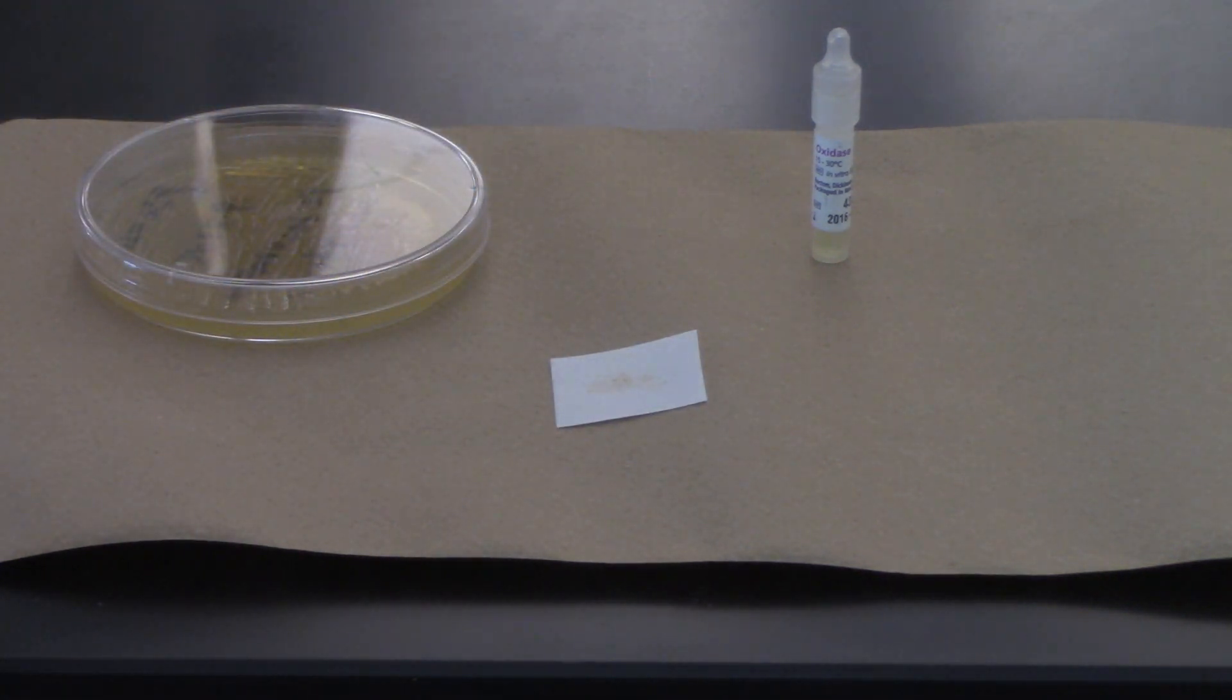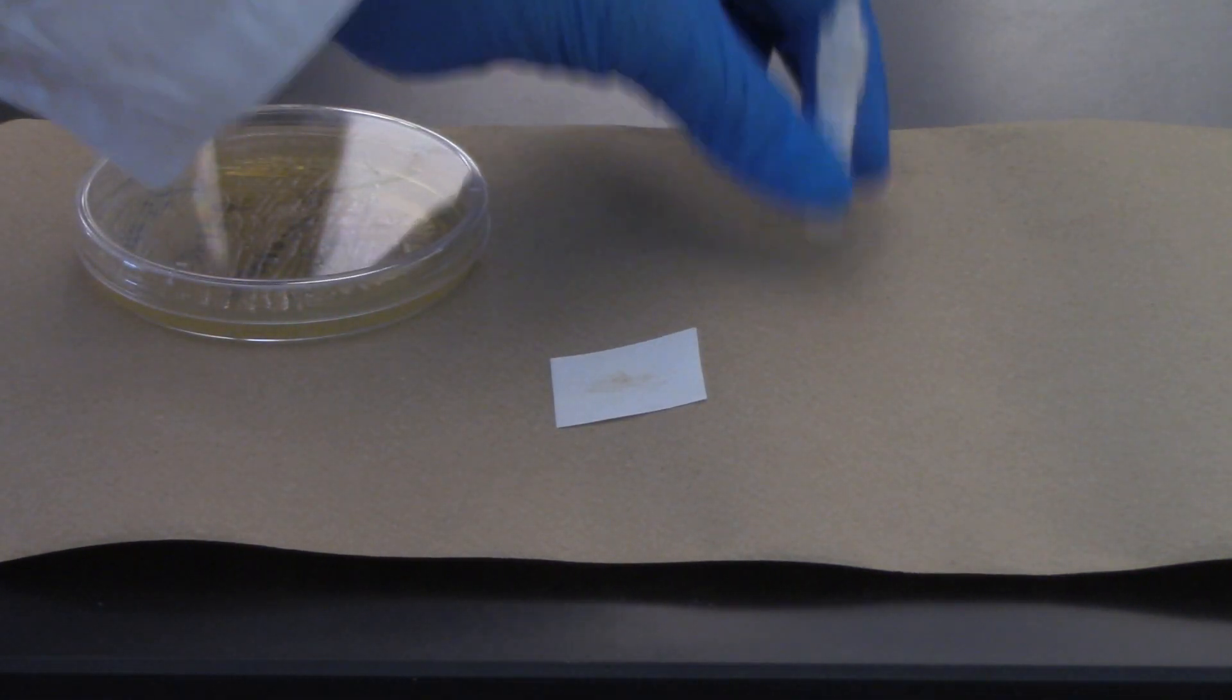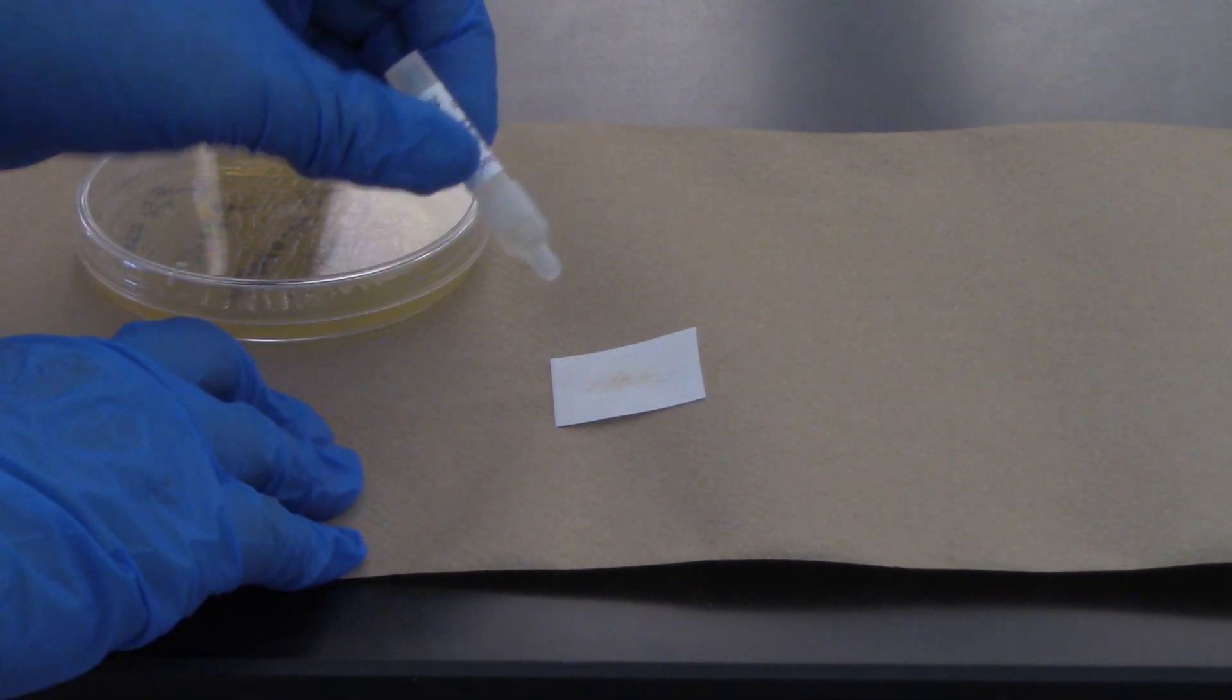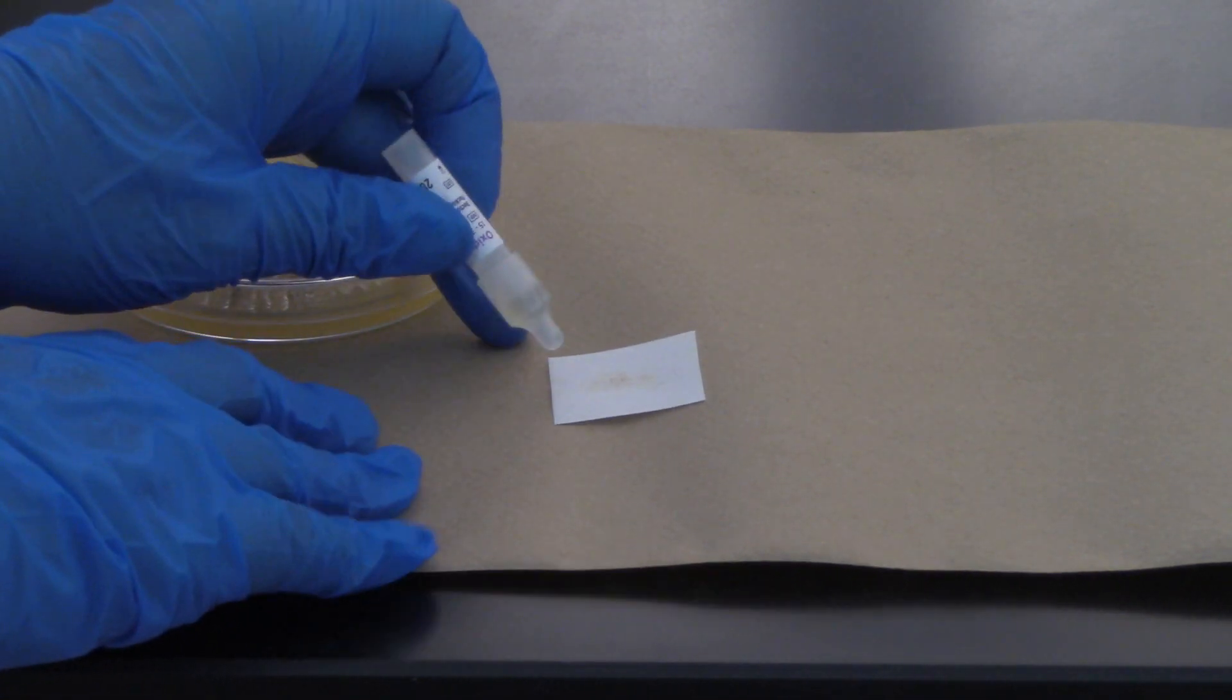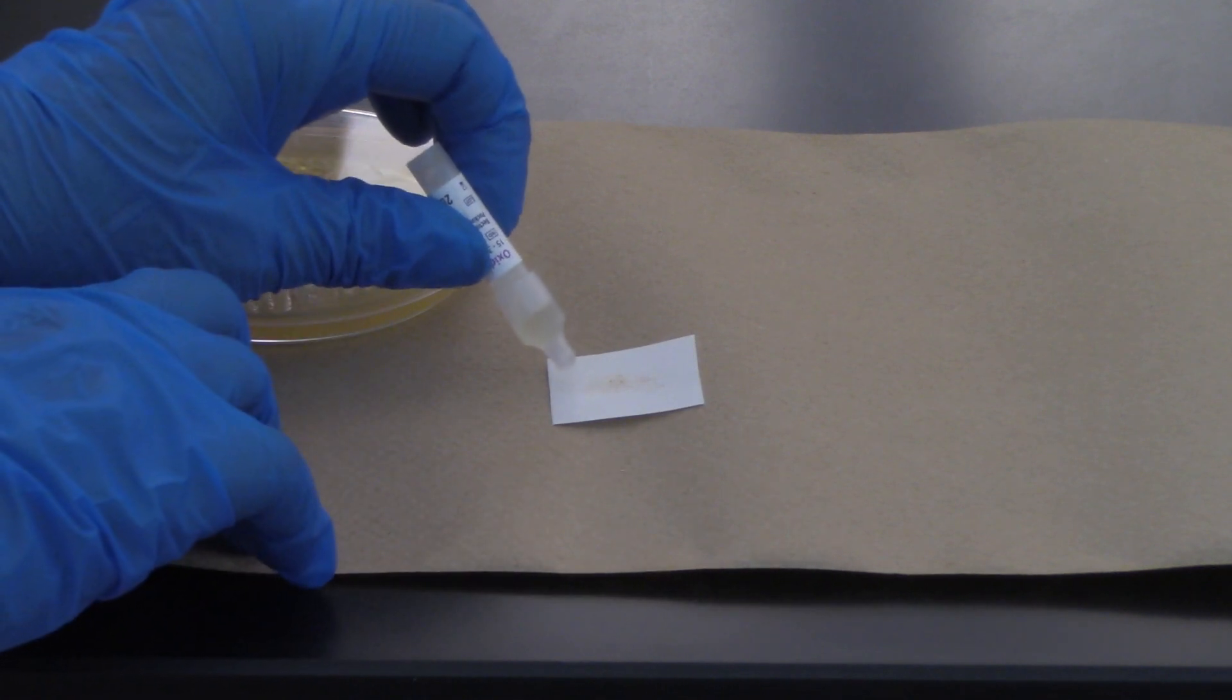Okay, that should be enough. I'm going to dispose of my dowel and add my oxidase reagent, but I'm going to add it next to where I added the culture and let it wick across the Biblius paper.